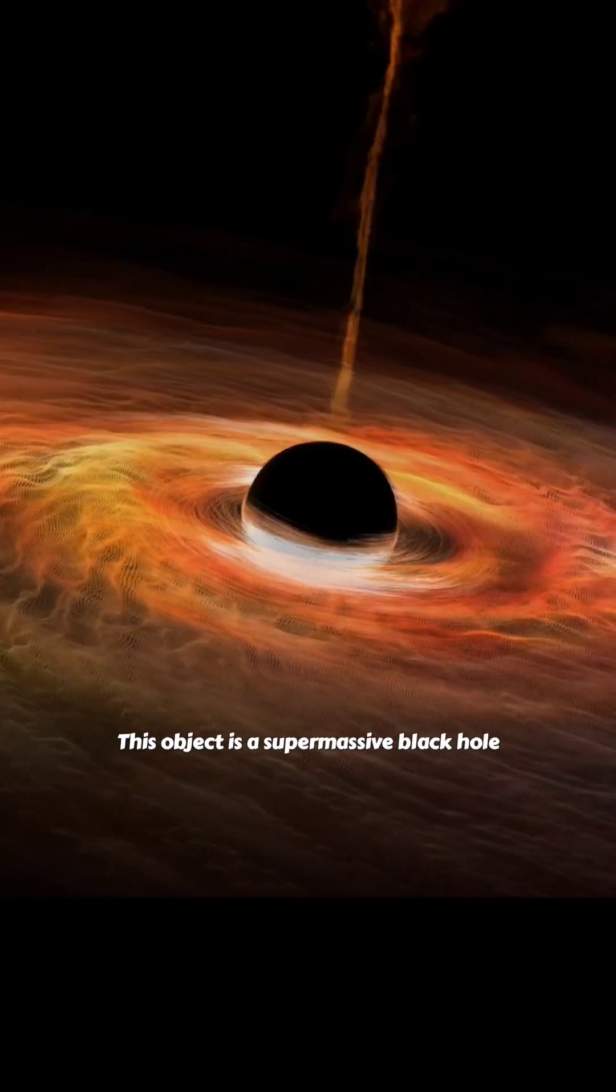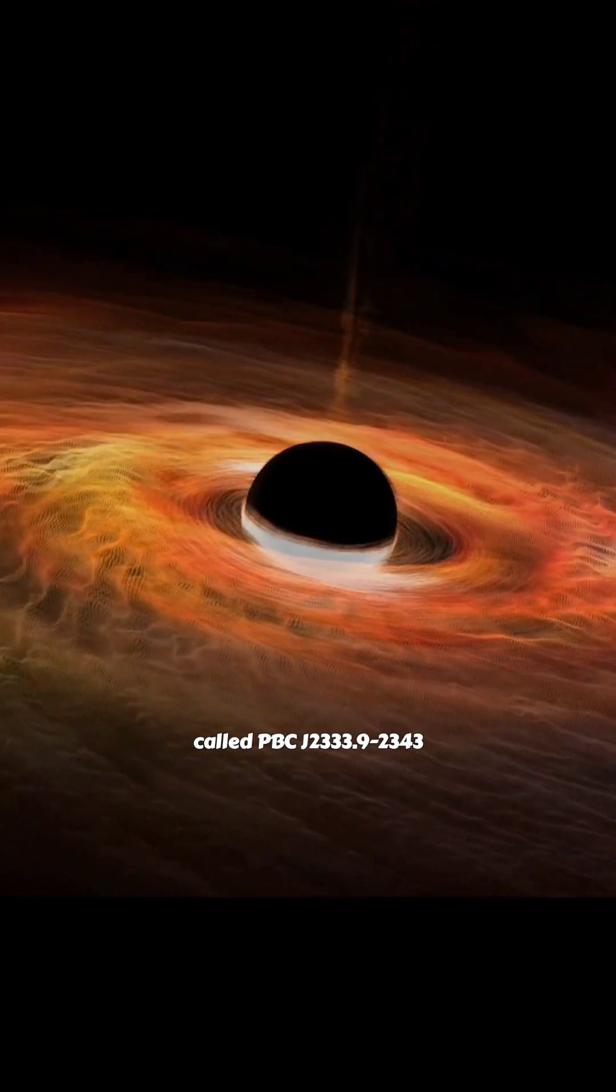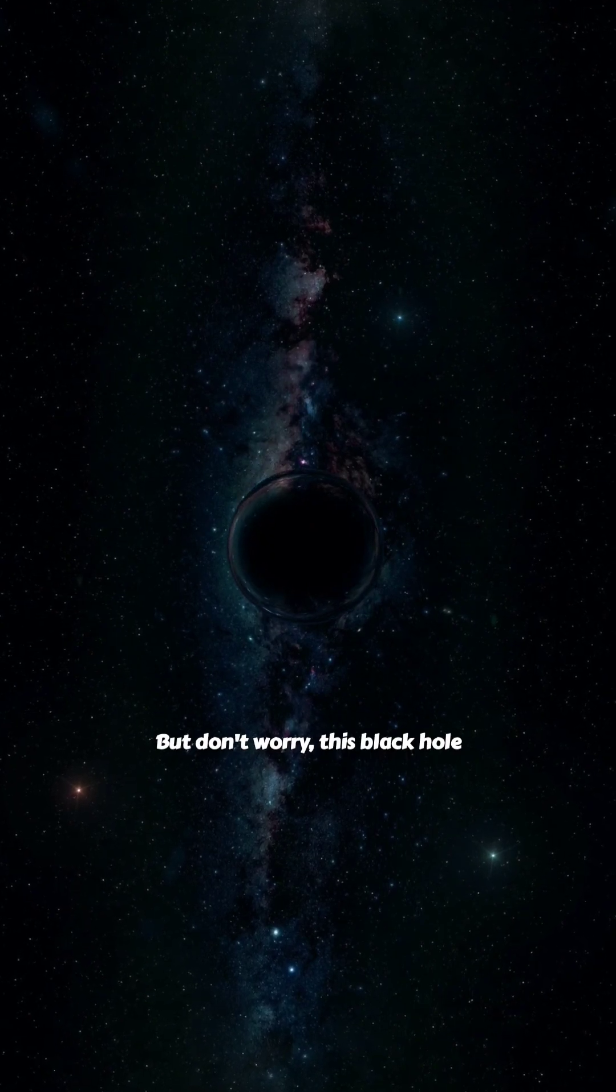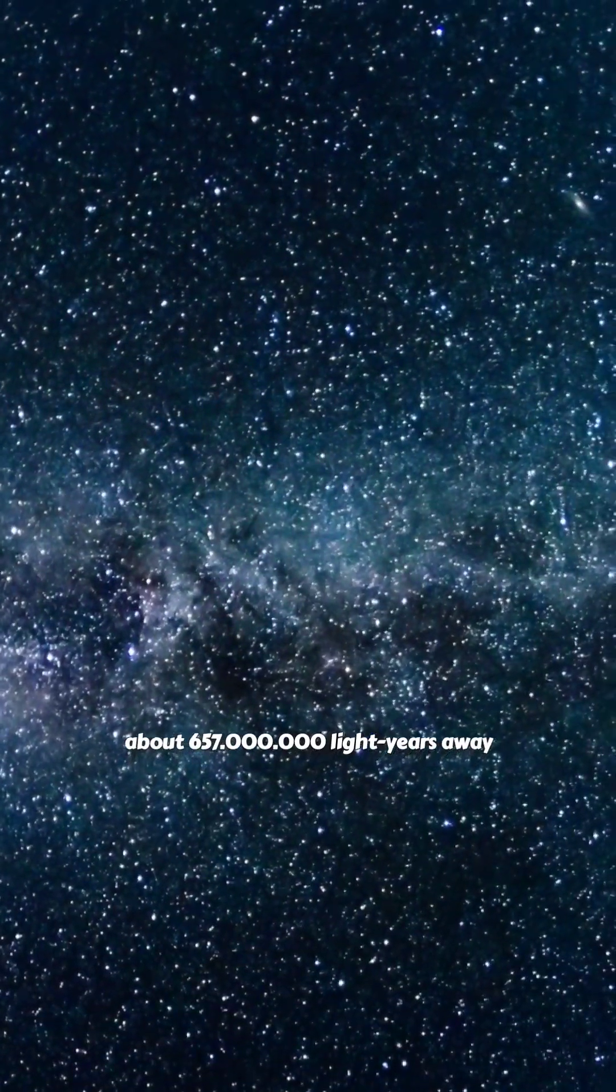This object is a supermassive black hole called PBCJ2333.92343. But don't worry, this black hole is located far enough from Earth, about 657 million light-years away.